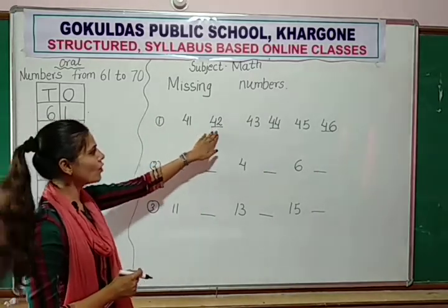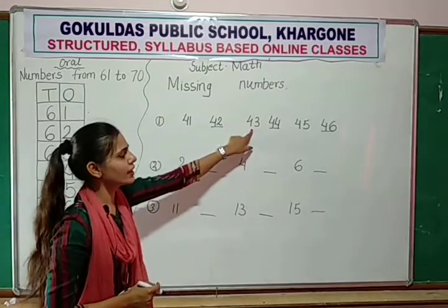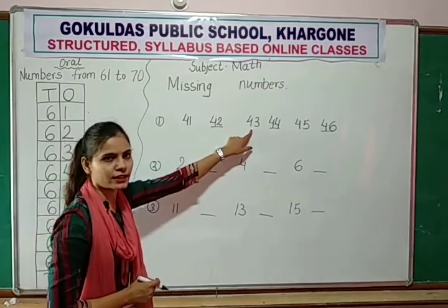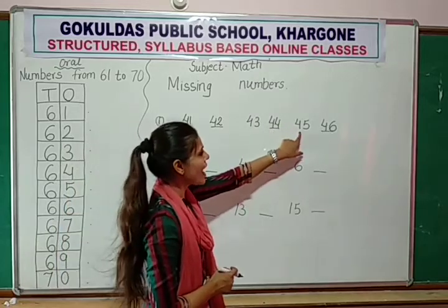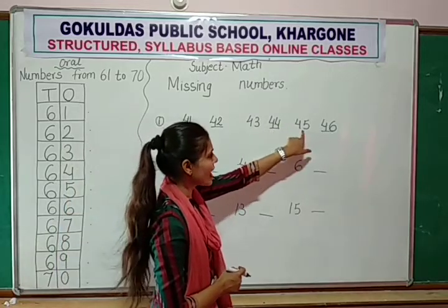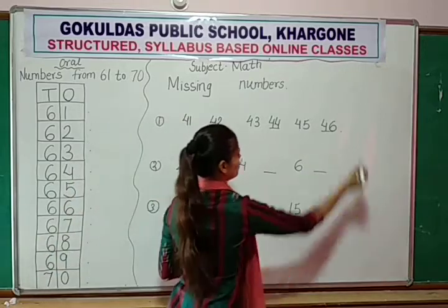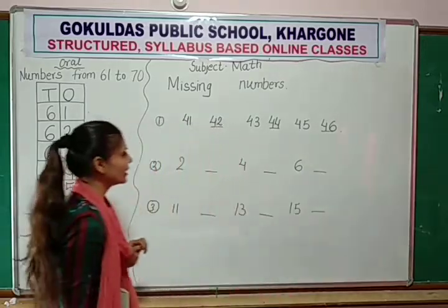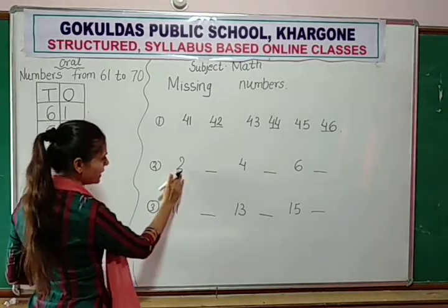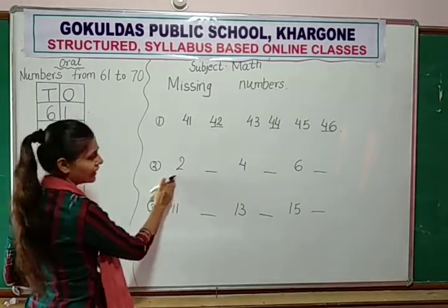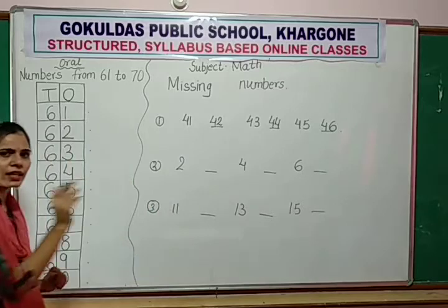Your line is complete: 41, 42, 43, 44, 45, and last 46. Full stop. Now next example. The number is only number 2. After number 2, which number will come?